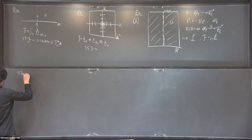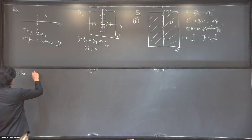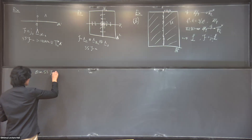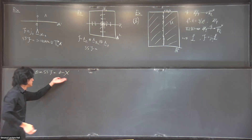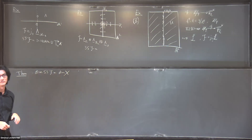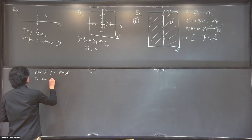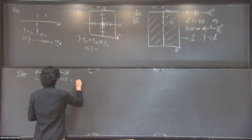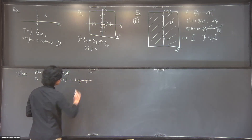There are some remarkable things one can say in general about this singular support. The dimension of the singular support equals the dimension of X, assuming X is equidimensional and F is nonzero. Furthermore, in characteristic zero, the singular support of F is always a Lagrangian subvariety of the cotangent bundle.